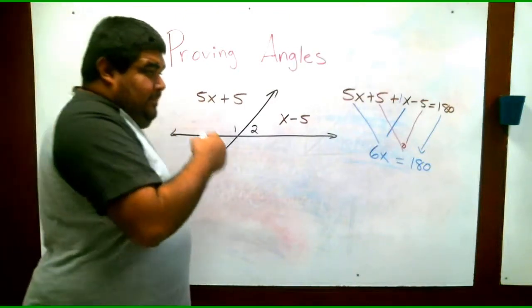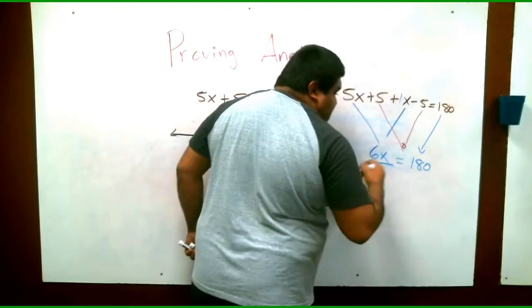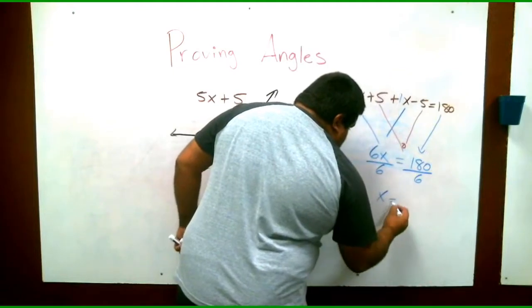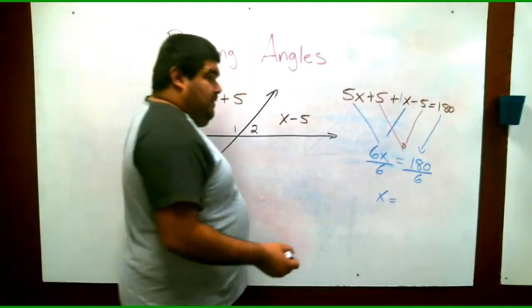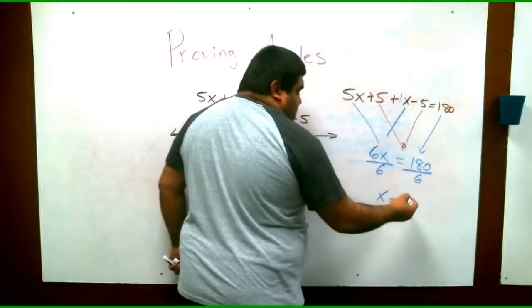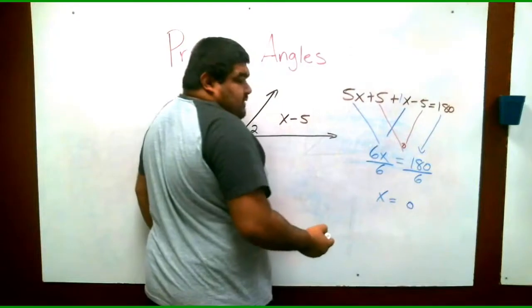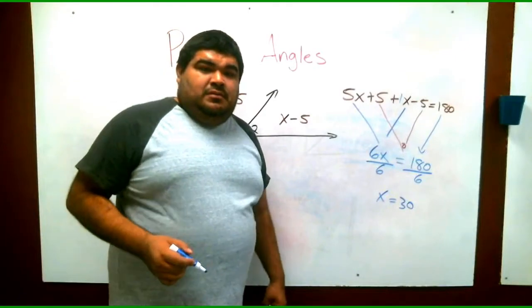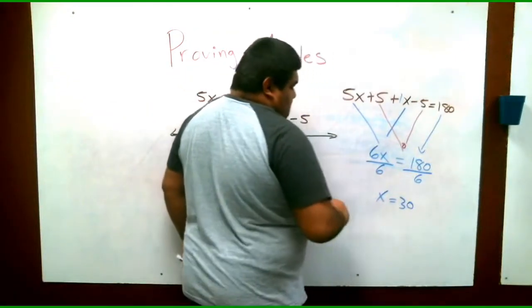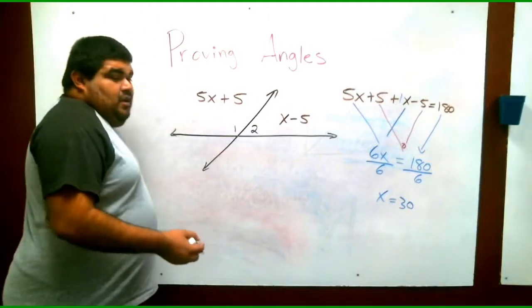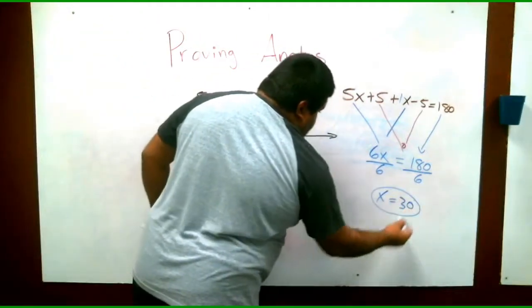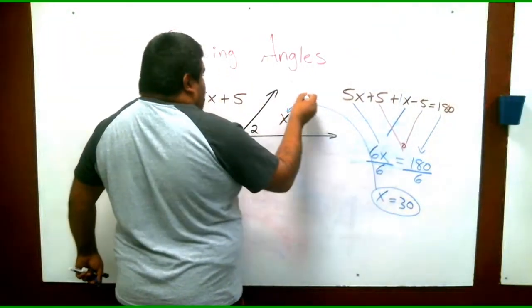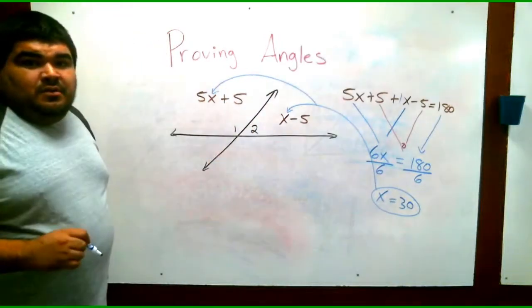Now that we have that, we can actually say that if we get rid of the 6 by dividing, right, this is the opposite of multiplication. We have x equals, how many times can 6 go into 18? We're not going to focus on the 0 right now. We're going to just drop the 0. 6 into 18 is 3, right? So 30 times. Now that we have x equals 30, we can actually plug in 30 for x, x here and then x here. We can plug it into both x's.